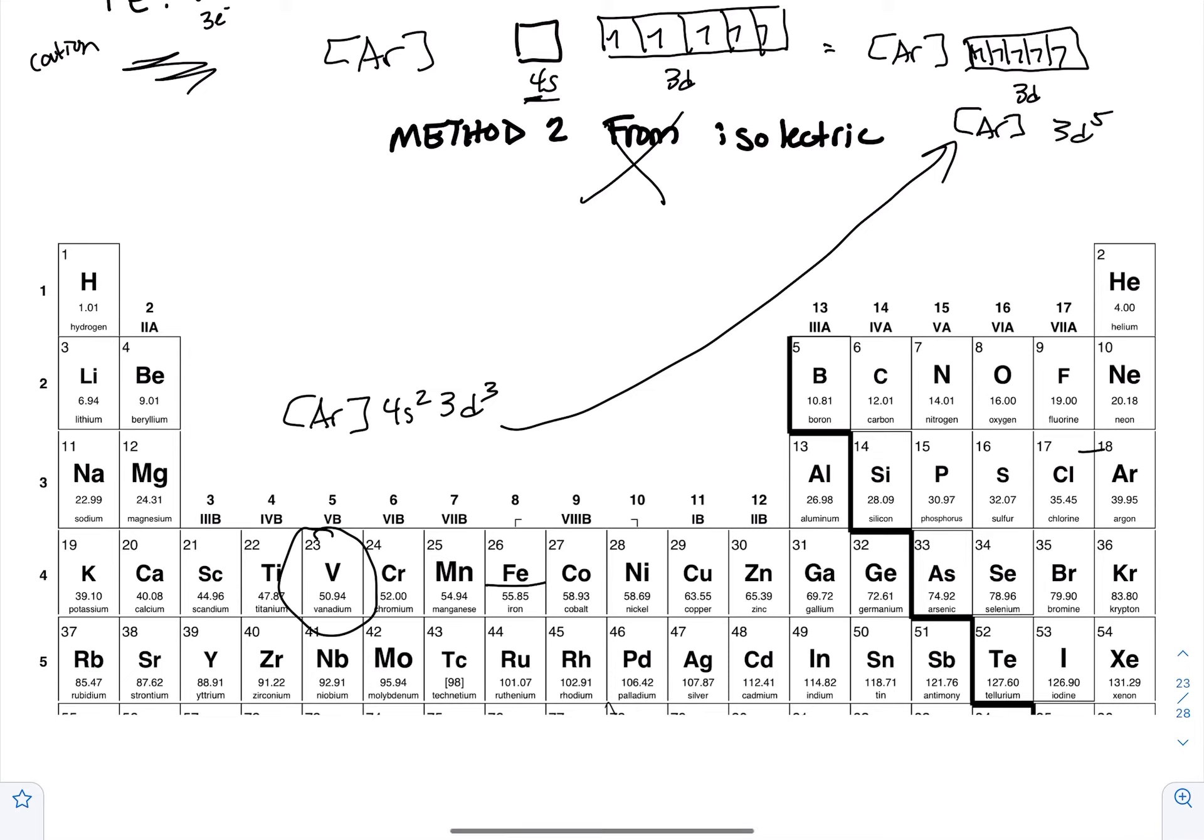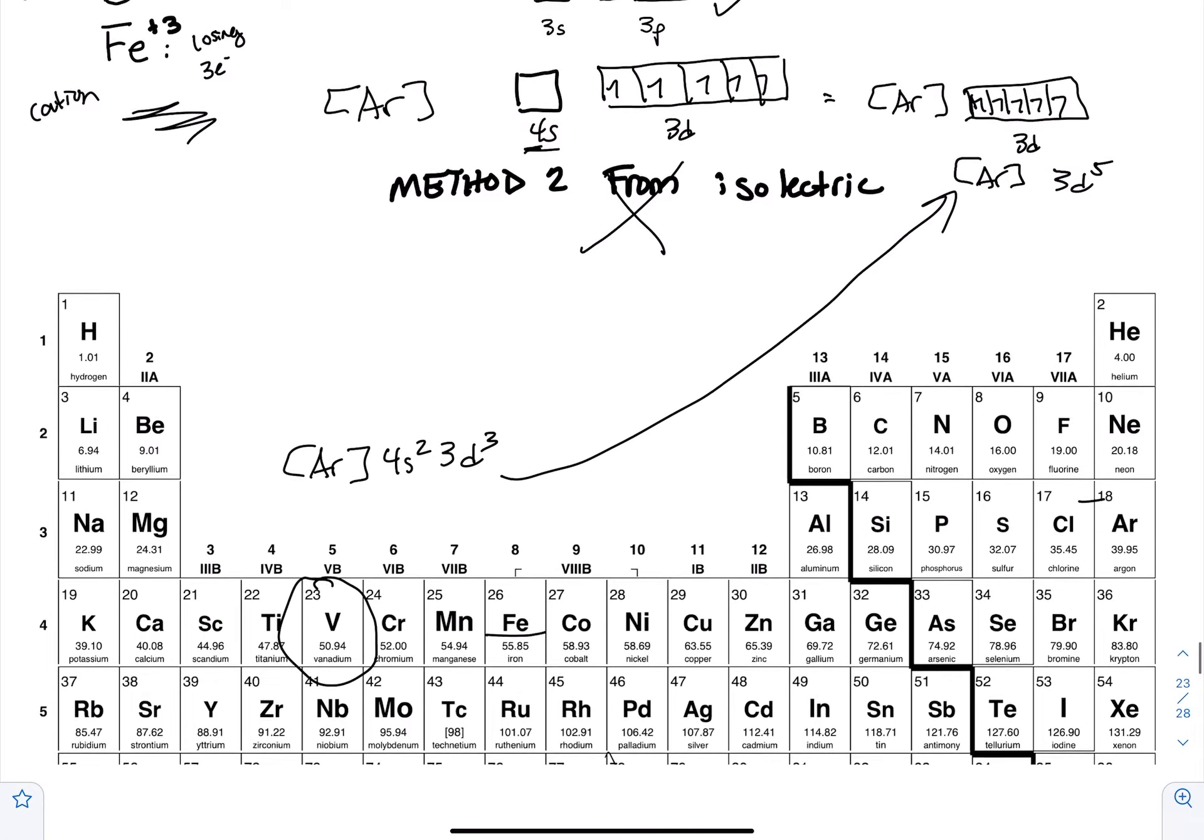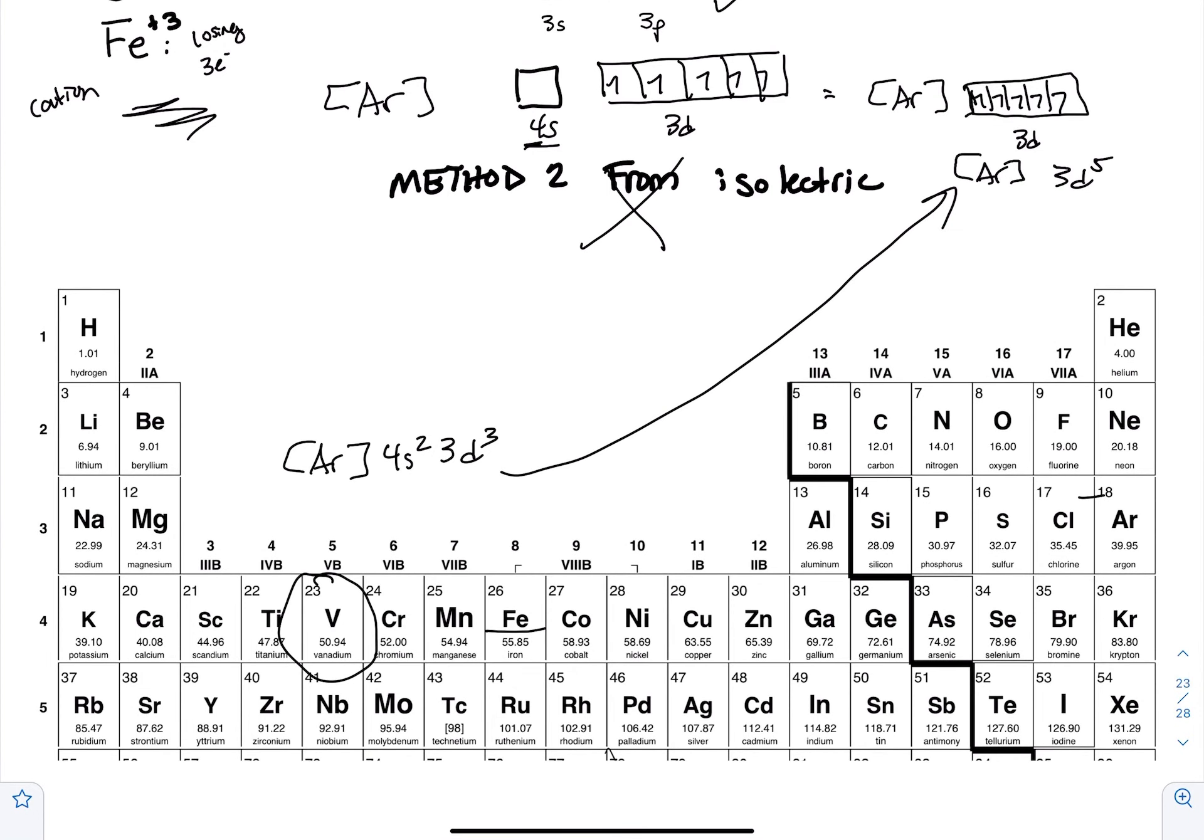You cannot use, when you're doing this cation business, method two for anything in the d-block. You can use it in the s-block and the p-block, though.